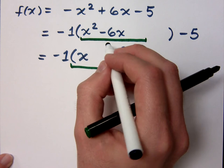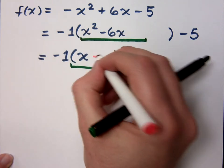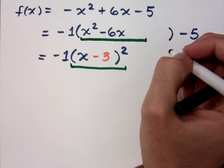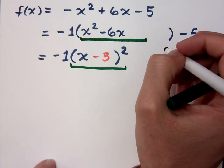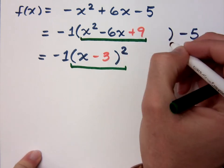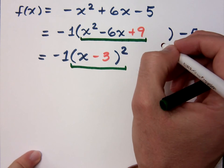Divide negative 6 by 2, and you get what? I get negative 3. What's negative 3 squared? Plus 9. But I can't just put a plus 9 here because that changes it. What do I have to do?